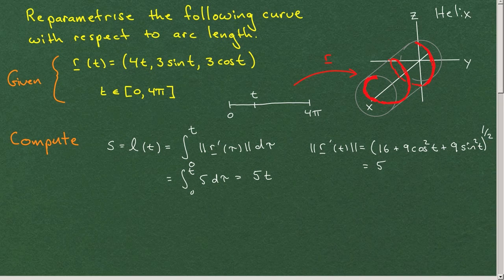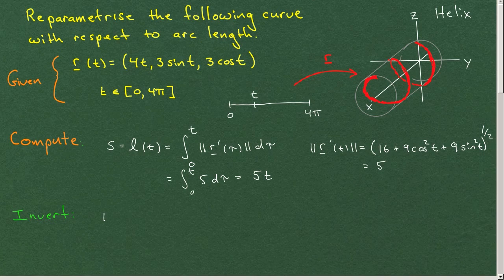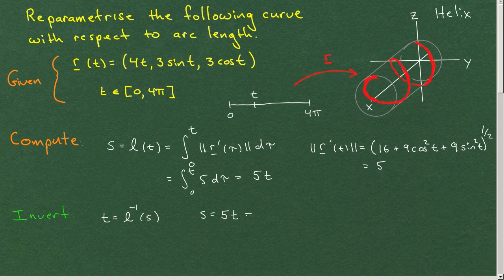So then the next step is you have to, this is s in terms of t. You need to invert that expression. In this case, it's easy. What you need is t is l inverse of s. That's the formal statement. In this case, let's just think of it this way. We have s is equal to 5t. So inverting gives t is equal to s over 5.